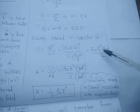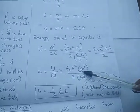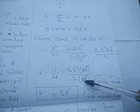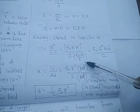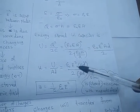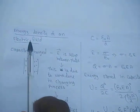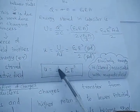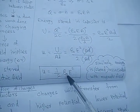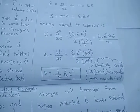After dividing by the volume A×d, the area and distance terms cancel. Finally, we get the energy density of an electric field expression: U = ½ε₀E².